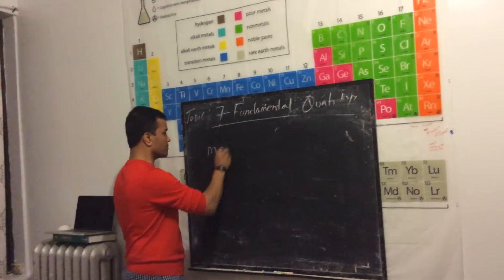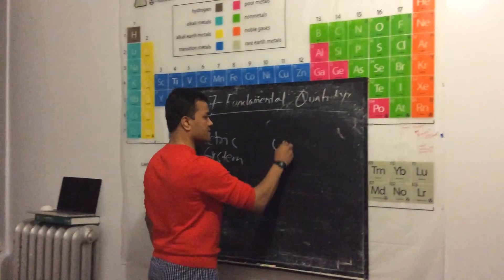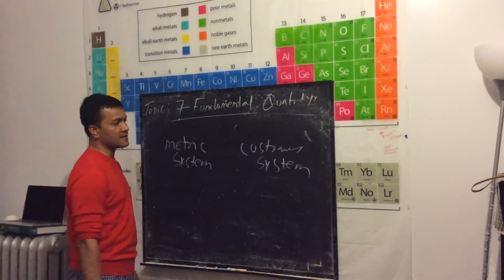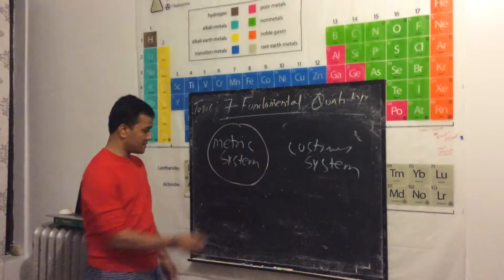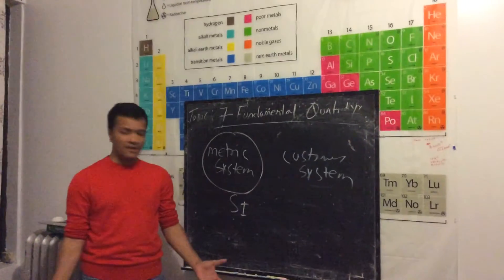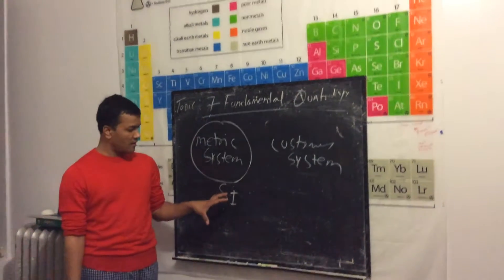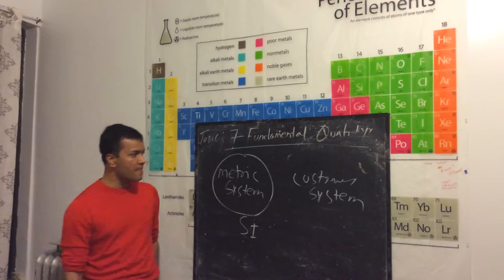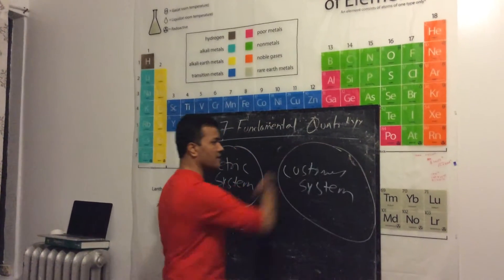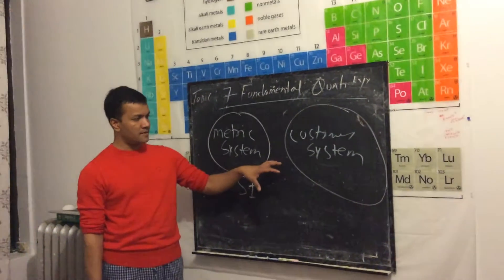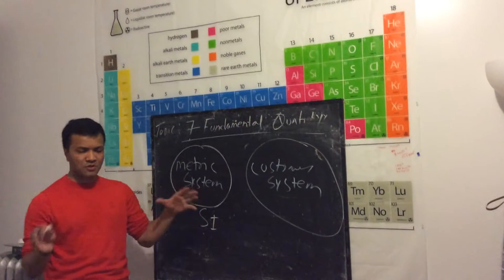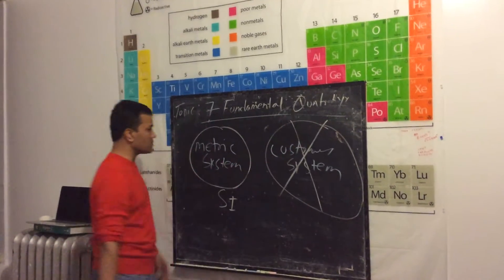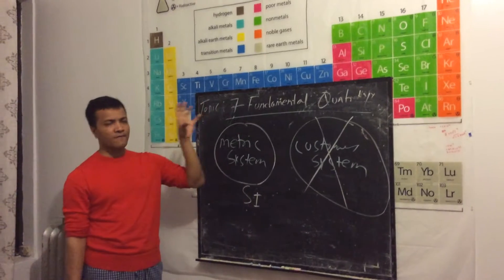One is metric system, another is customary system. Scientists use metric system, and we call it SI system, international system, pioneered by the father of chemistry. Customary system, many people still use, in fact the majority of people use customary system. But we're not going to use customary system, we're going to use metric system and talk about seven fundamental quantities that scientists use for physics and any sciences.